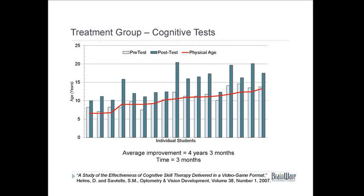The group that used Brainware had quite a different experience. You can see the individual results as well as the average: a four-year, three-month improvement over that same three-month period. So it's a very substantial kind of impact. These results have been replicated by others — different people giving tests and administering Brainware, a variety of populations in different parts of the country, from different socioeconomic statuses and races.